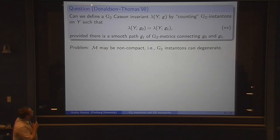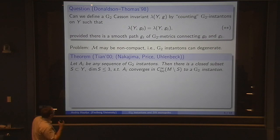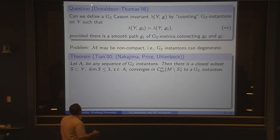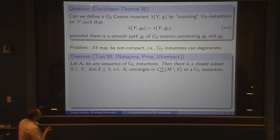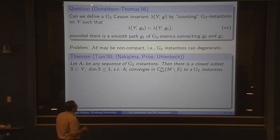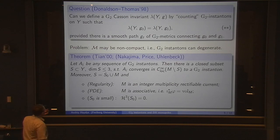The basic problem is that the moduli space of G2 instantons may be non-compact, which means that G2 instantons can degenerate. The way they can degenerate was described by Tian. The theorem I want to cite is due to Tian, but a lot of work came into this theorem using Nakajima, also Price and Uhlenbeck. The statement is: if you have a sequence of G2 instantons, then there is a closed subset in Y of dimension at most 3 such that the sequence converges on the complement of the set to a G2 instanton.